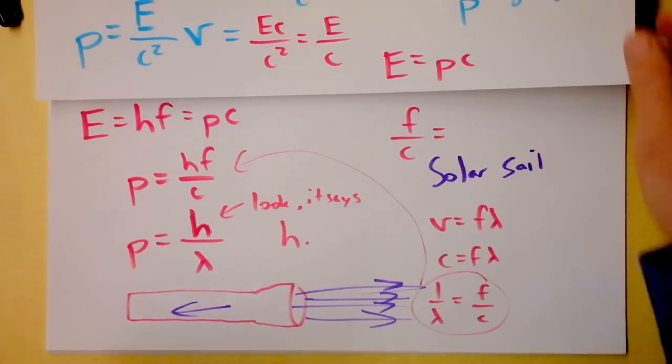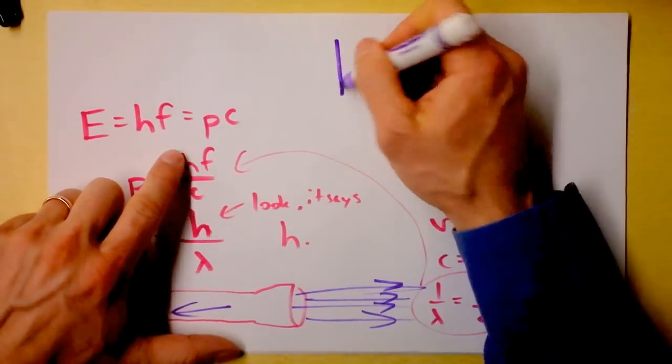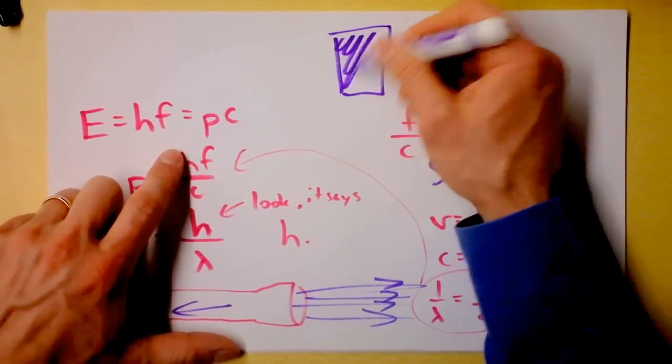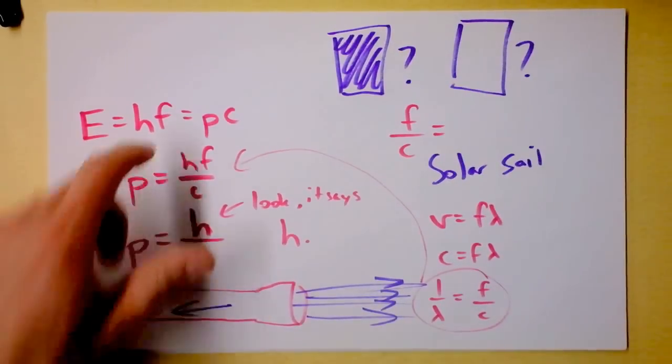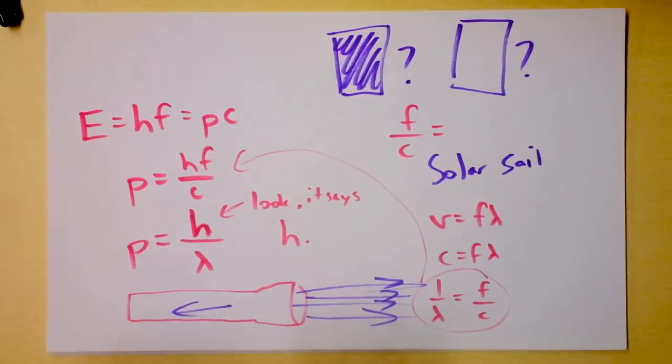And ooh, what do you think? Would you get a greater momentum transfer if you were building a solar sail out of a black solar sail, or out of a white solar sail? Greater momentum transfer from a black one or a white one? You make the call.